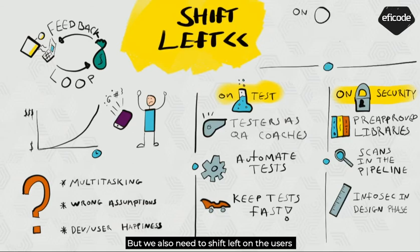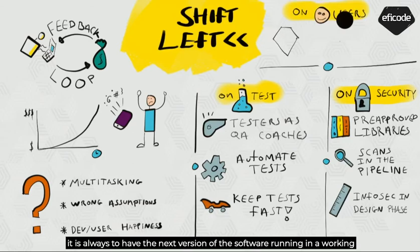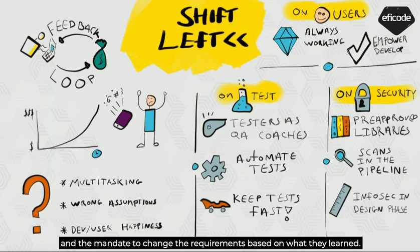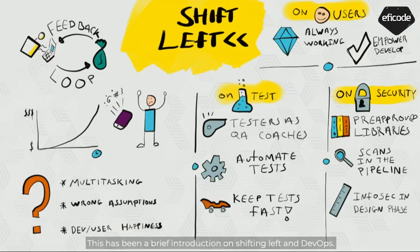But we also need to shift left on the users. Two simple ways to do this are to always have the next version of the software running in a working condition, and to make sure the team has direct access to user feedback and the mandate to change requirements based on what they learn. This has been a brief introduction on shifting left in DevOps.